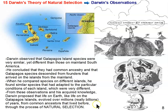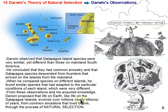From these observations, he proposed that the islands kind of represent the entire world and the continents of the Earth. Like life on the Galapagos Islands, life on Earth and on the different continents evolved over millions — really billions — of years from common ancestors through the process of natural selection, or descent with modification.